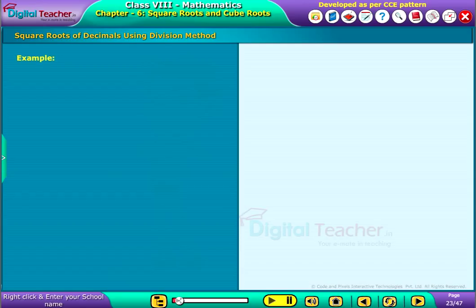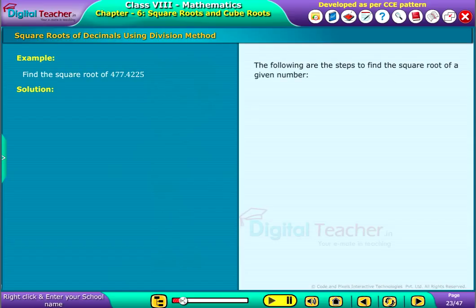Consider an example. Find the square root of 477.4225. Solution: The following are the steps to find the square root of a given number.